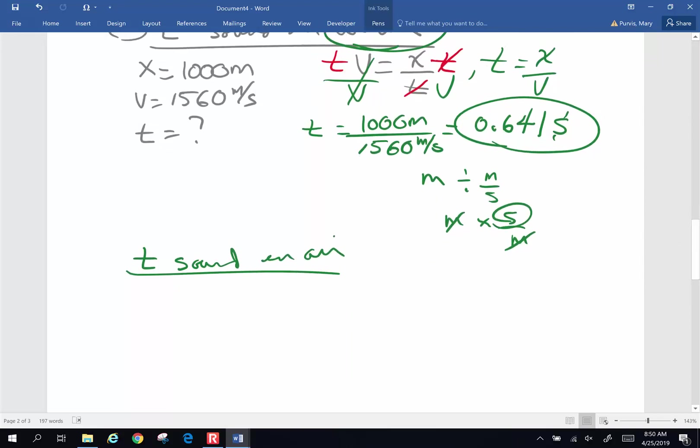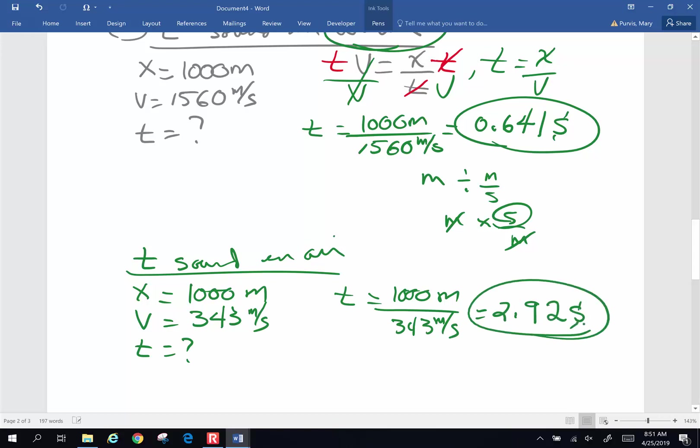Distance is 1,000 meters. Velocity of sound in air, we were told to use 343. Time is my question mark. And time is going to be my 1,000 meters divided by 343 meters per second. So I got 1,000 divided by 343. I've got 2.915 or 2 seconds when I round it off.